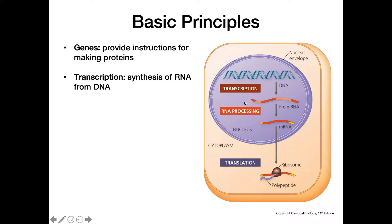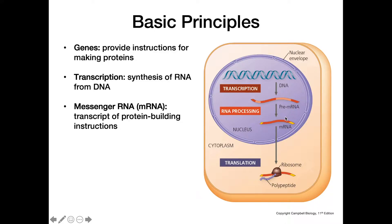Messenger RNA is the transcript that is actually exported from the nucleus into the cytoplasm to then be translated. We have this intermediate step — the pre-mRNA — and so we go through a process called RNA processing, which we'll cover more in another video, to get our final mRNA that gets exported and can then be used to make a protein.